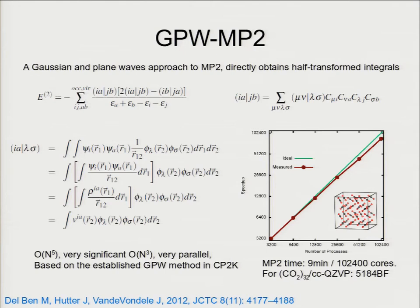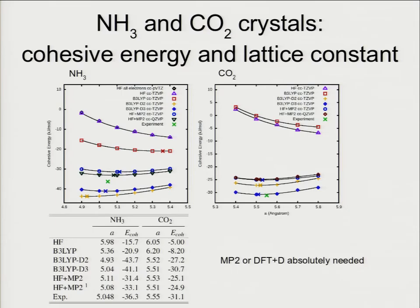This is demonstrated on a crystal of CO2 — it scales almost perfectly up to 100,000 MPI processes, which is good scalability for a really complicated calculation. Once you use 100,000 processors, you can do a very large MP2 calculation in just 10 minutes — 5,000 basis functions. Very few codes can run something similar; they would have to wait many weeks for significantly smaller calculations. However, we don't use this approach anymore because we found something better.